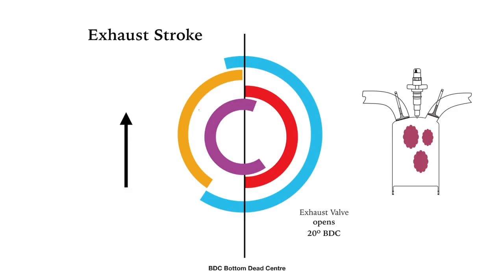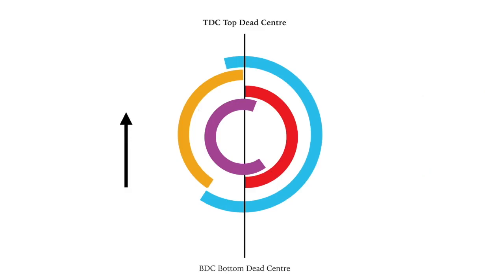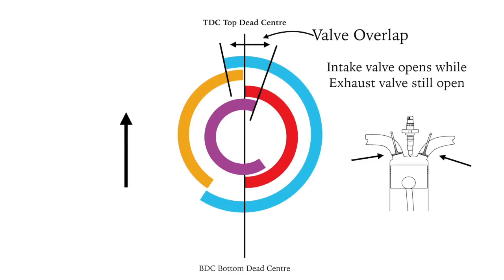You may also have noticed that the air intake valve is open at the same time as the exhaust valve. It opens just before top dead centre, but the exhaust valve doesn't close until just after top dead centre. This is called valve overlap, and it aids the efficiency of the engine.